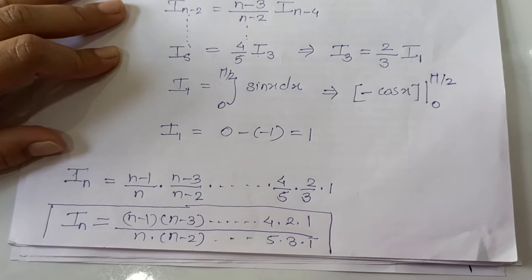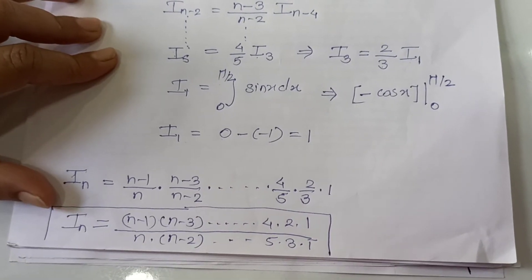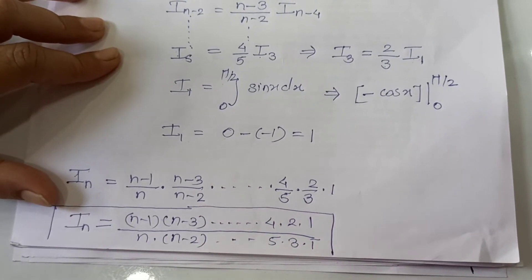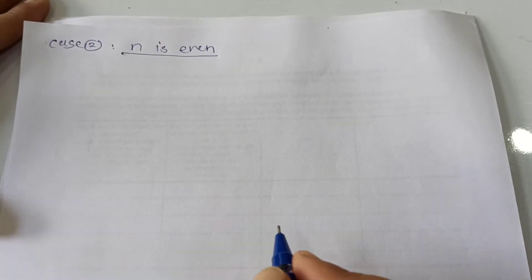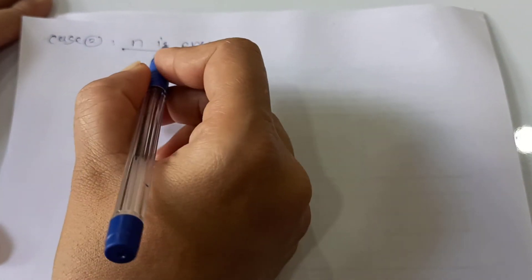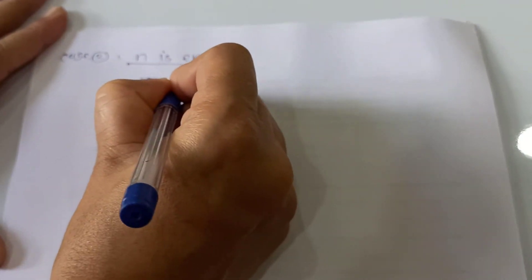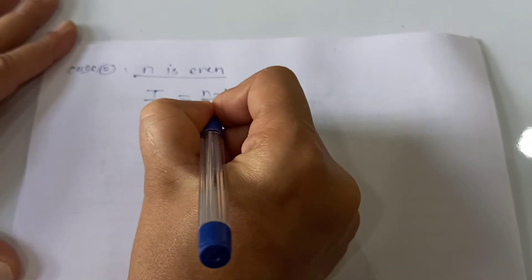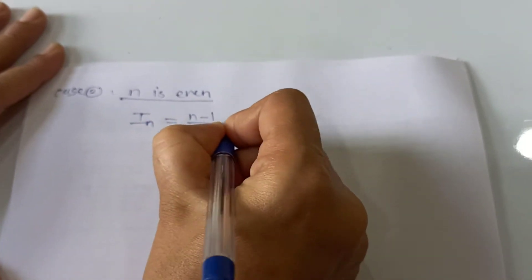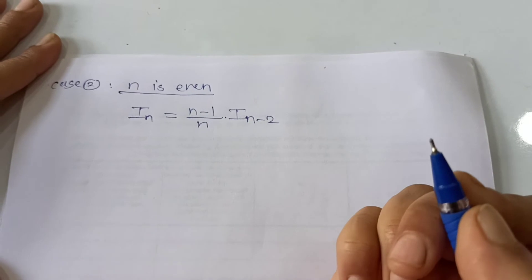Now let's prove the second case: what happens when n is even? We again start with Iₙ = (n−1)/n · Iₙ₋₂.